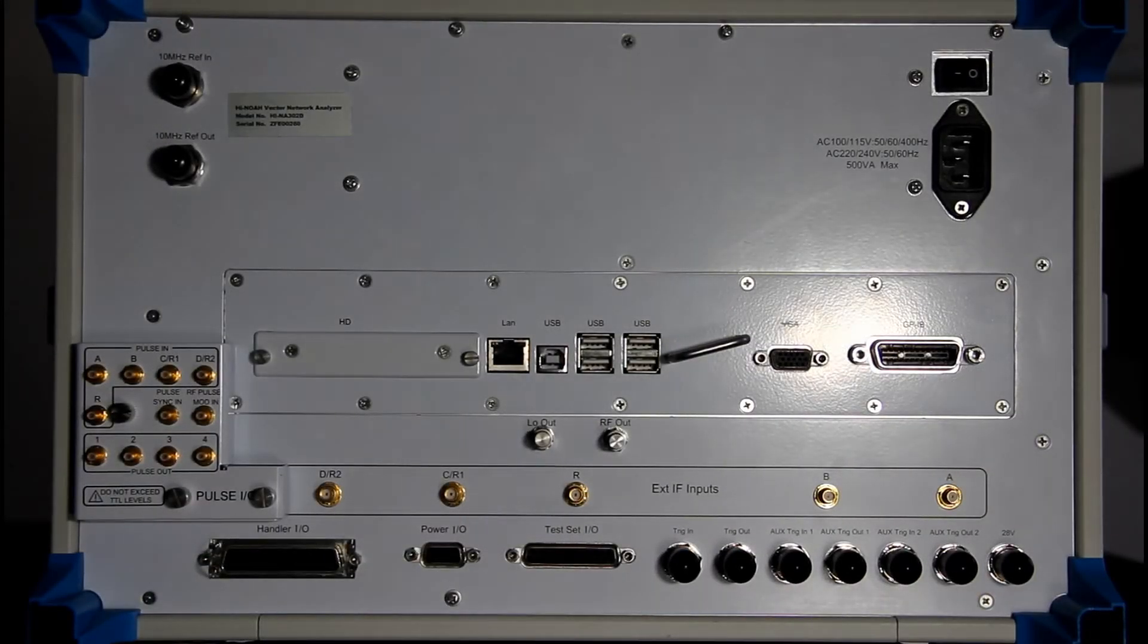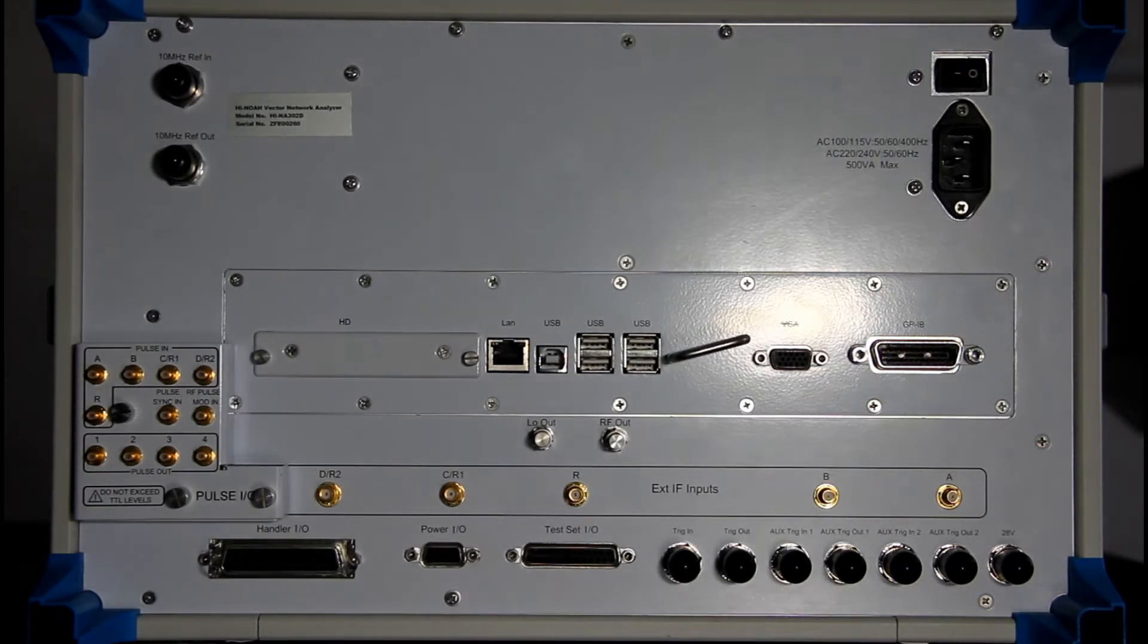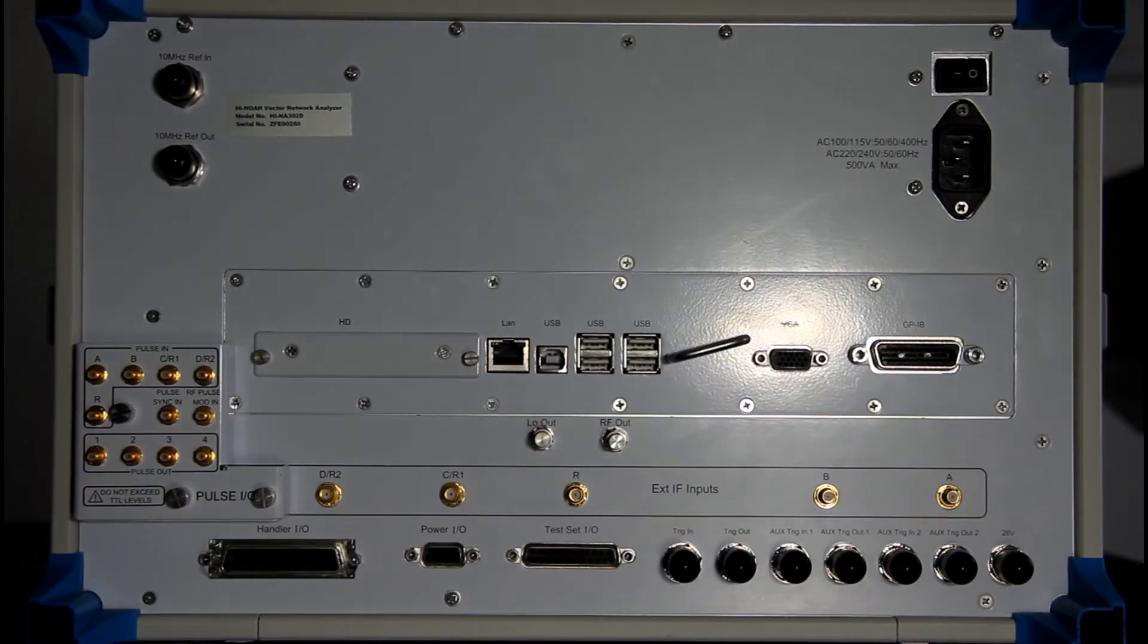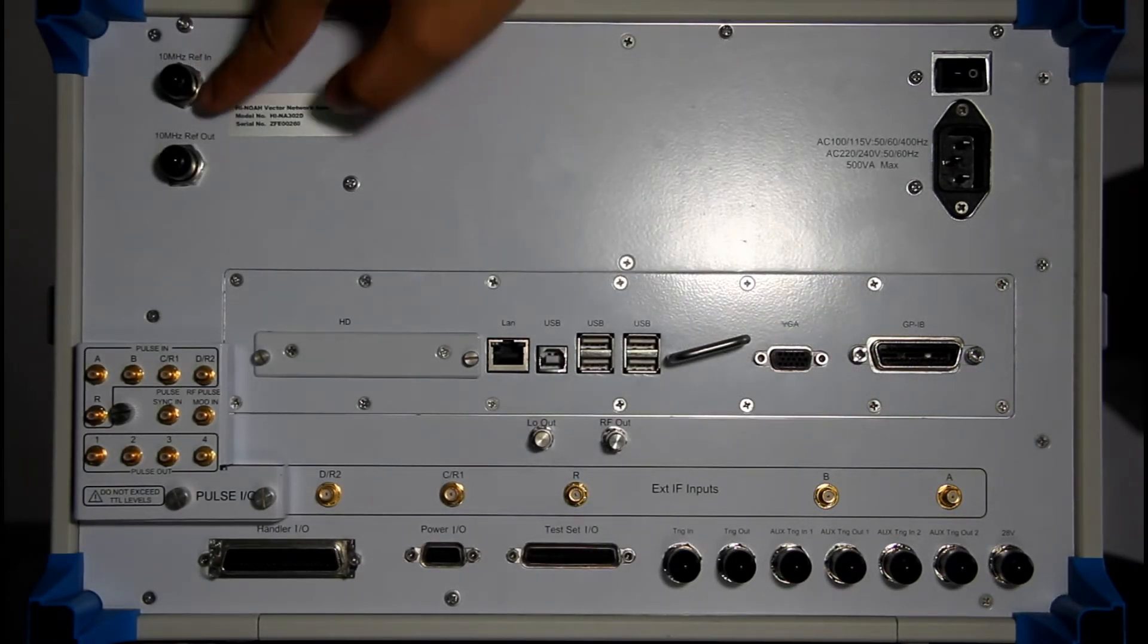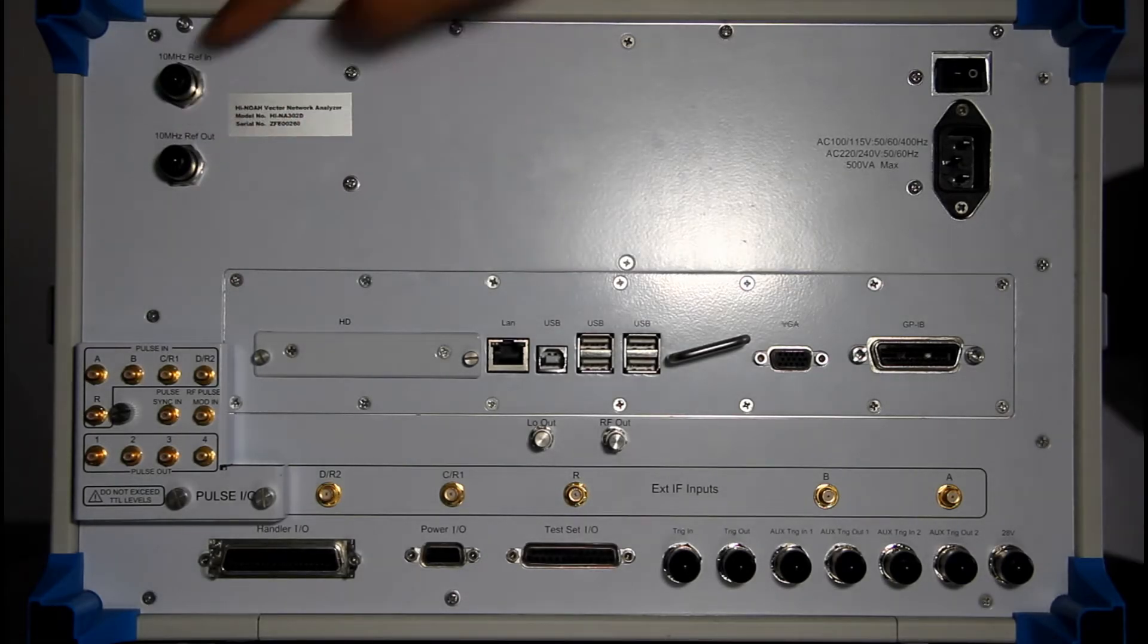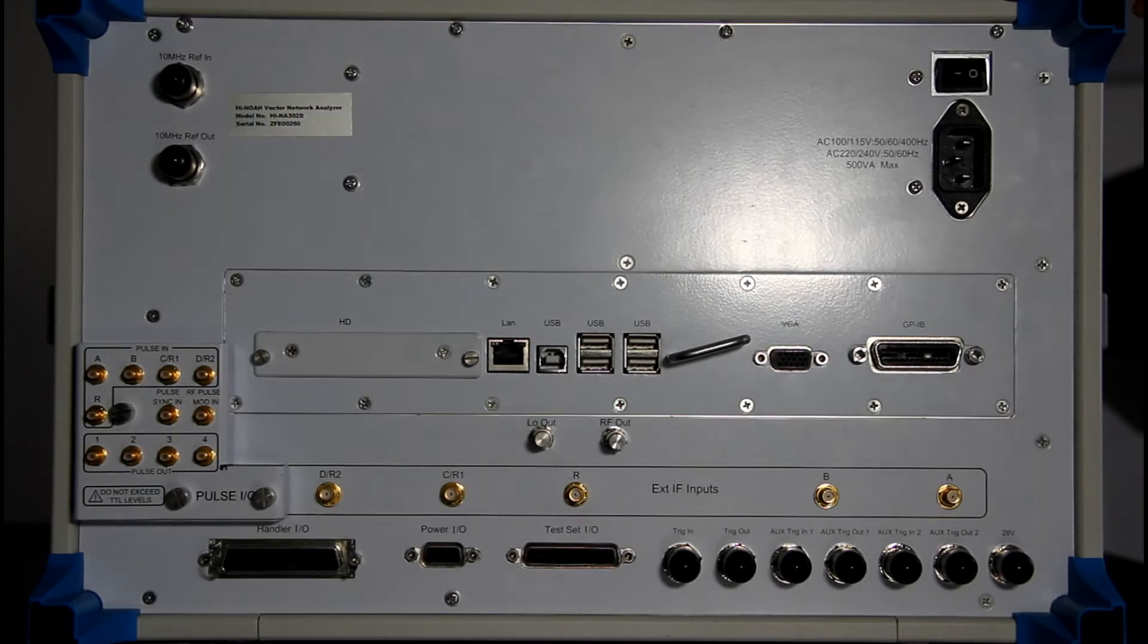So this is the rear panel of S3602D. We will introduce all these interfaces to you. First, let's see the interface on the up left corner. This is the reference in and reference out interface. Then on the right up corner, there is power switch and the power cord interface.